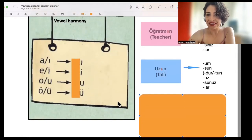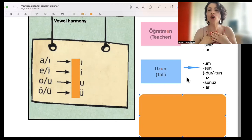So let's do it together with personal pronouns. I hope you have memorized them already. Repeat it with me, please. Ben uzunum. Sen uzunsun. O uzun. Biz uzunuz. Siz uzunsunuz. Onlar uzunlar.